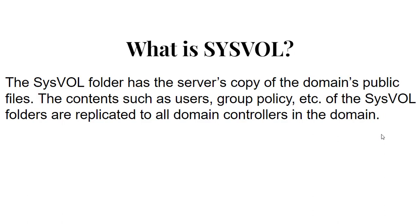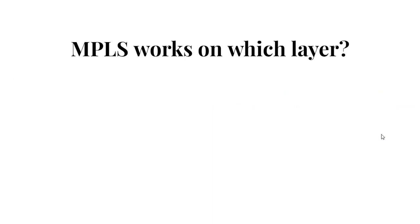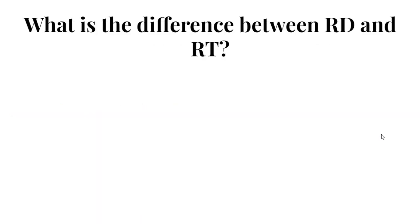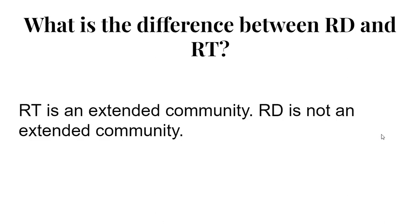Question 16: MPLS works on which layer? Answer: MPLS operates between Layer 2 and Layer 3 of the OSI model. Question 17: What is the difference between RD and RT? RD, which stands for Route Distinguisher, is not an extended community, whereas RT, which stands for Route Target, is an extended community used in MPLS networks.